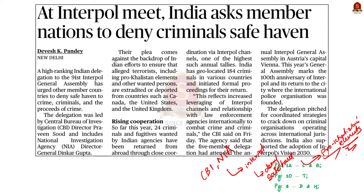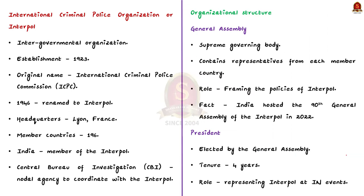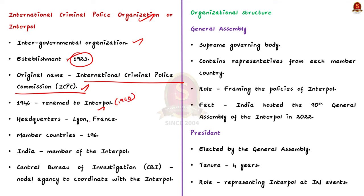Let us understand some important points about Interpol. Interpol stands for International Criminal Police Organization. It is an international intergovernmental organization established in 1923, originally called the International Criminal Police Commission, and was renamed Interpol in 1946. It is headquartered at Lyon, France, and currently has 196 member countries. India is also a member. Each member country must designate an Interpol National Central Bureau to coordinate with Interpol, and India has designated the CBI as its Interpol National Central Bureau.